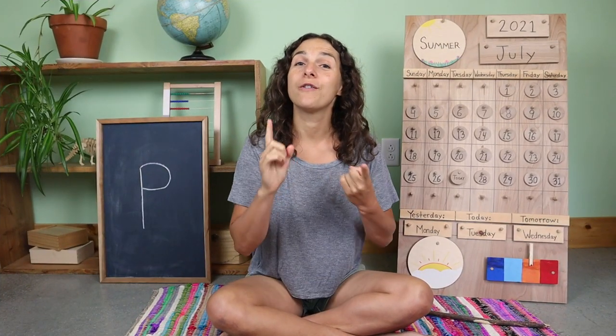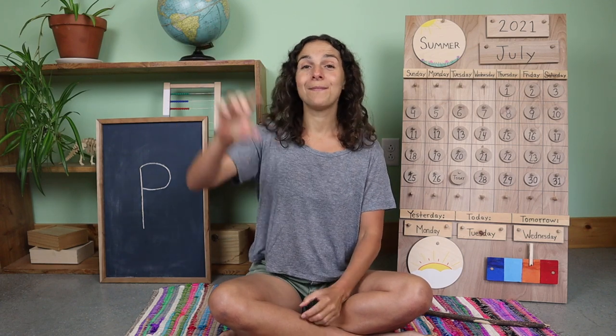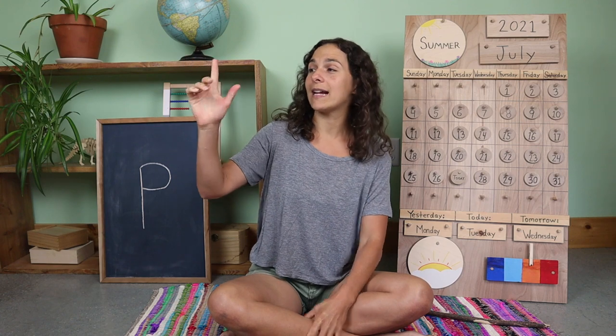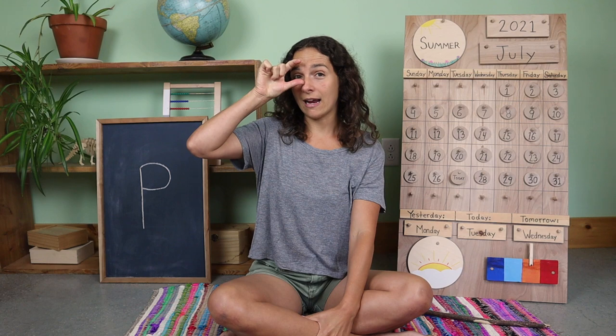So we've gone over the letter of the week and the number of the week. Now it's time to go over the sign of the week. Yesterday I showed you how to say moon in sign language. Do you remember how to do that? You take one of your hands and use your counting finger and your thumb, curve it in an inward motion, then bring those fingers to your eye and forehead area and move it up and out. Moon.